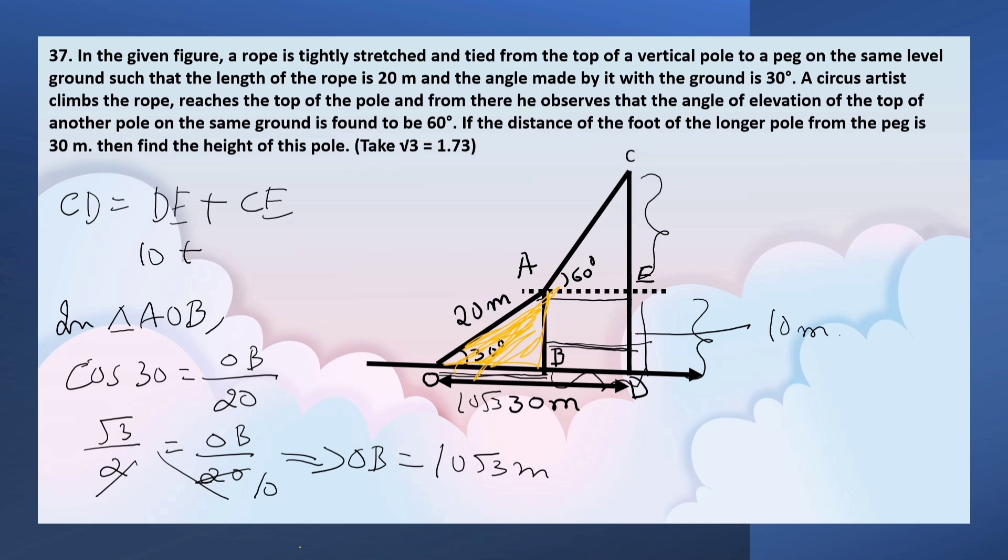So BD equals 30 minus 10√3 meters. Therefore AE equals 30 minus 10√3 meters.